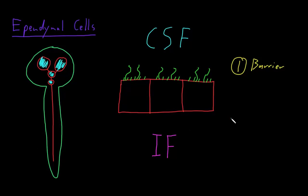The second major function of ependymal cells is to participate in secretion of the cerebrospinal fluid. So secreting CSF, cerebrospinal fluid.